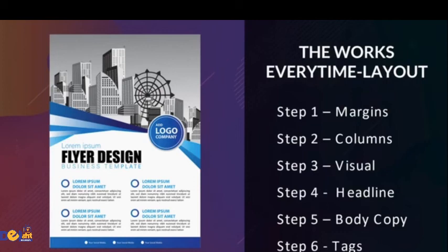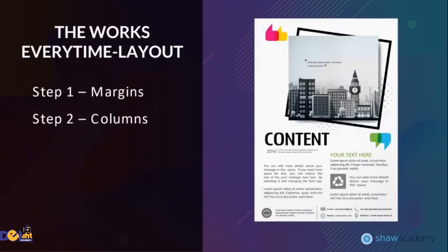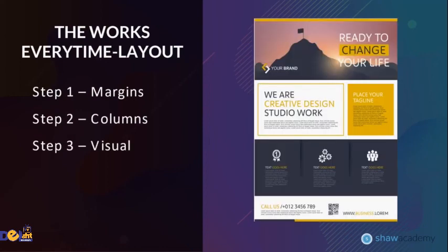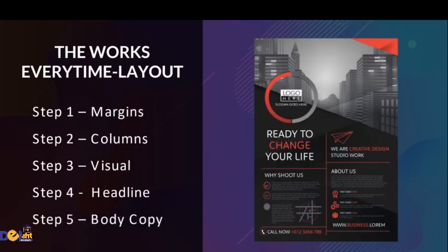We will now see examples of different jobs where the Works Every Time layout is applied. In the first example, the design has enough margins on each side of the document. The text is divided into two columns. The visual is placed at the top of the design. The headline slightly overlaps the visual. The body copy is placed in the two columns as created in step 2, and the tag is at the bottom of the document.